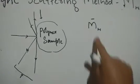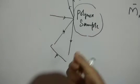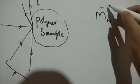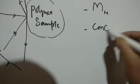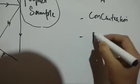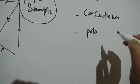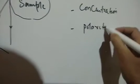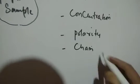This method has additional advantages. In addition to molecular weight, we can utilize the scattered intensity of light from the polymer sample to determine weight average molecular weight, and we can also determine the concentration of the sample in the polymer solution. We can also determine the polarity of the sample. Not only that, we can determine the chain length — ek polymer ki jo chains hoti hain, macromolecules — what is the length of the chain?